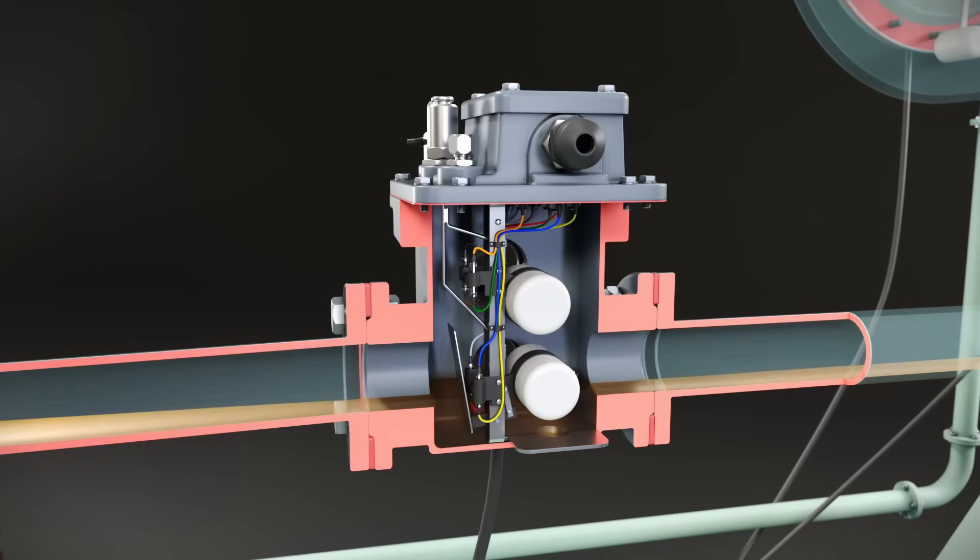Once it reaches a critical point, it activates its magnetic switch, sending a trip signal to shut down the transformer, preventing further damage or catastrophic failure.